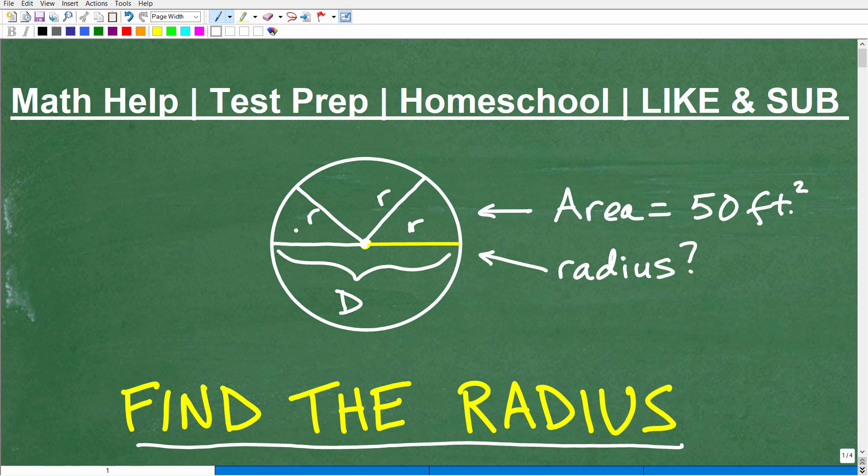But what we want to do is find the length of the radius, given that the area of this circle is 50 feet squared. So this circle here is 50 feet squared. How do we find the radius? Well, this is an important type of problem for all of you out there, whether you're taking algebra or geometry, to be able to do.